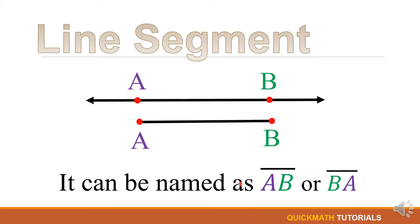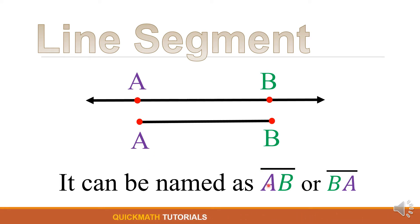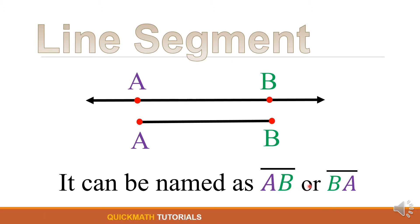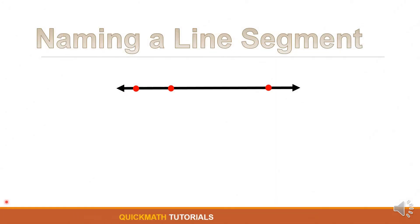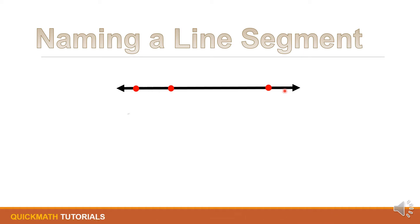A line segment can be named using the symbol for line segment followed by the two endpoints. So this is written as line segment AB, or you can interchange the letters and write line segment BA. Another example: we have a line with three points A, B, and C.